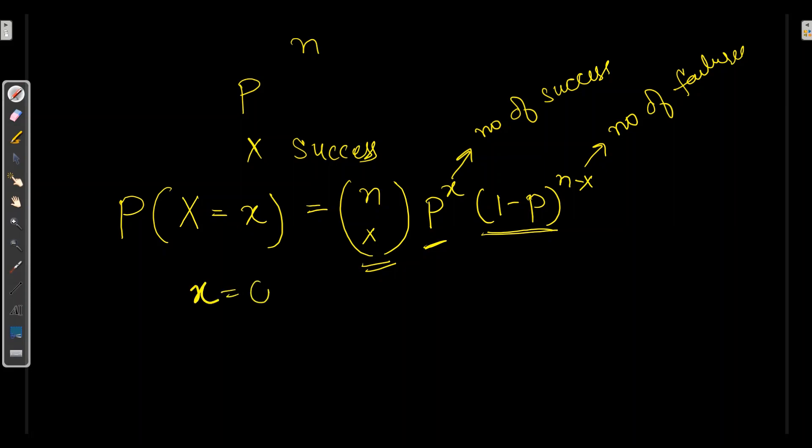Here X will have from 0 to N. And if we calculate mean, it will be NP. Whereas variance will be NP times 1 minus P. Now let's take a question.